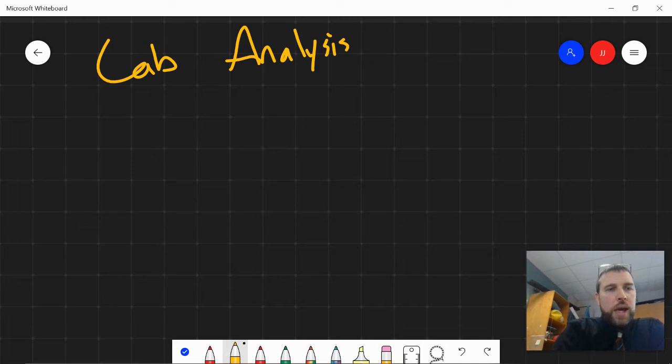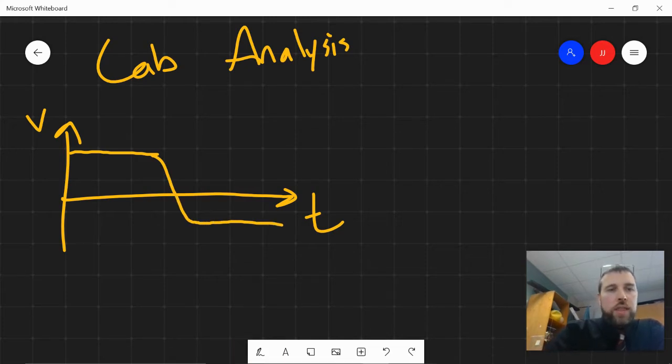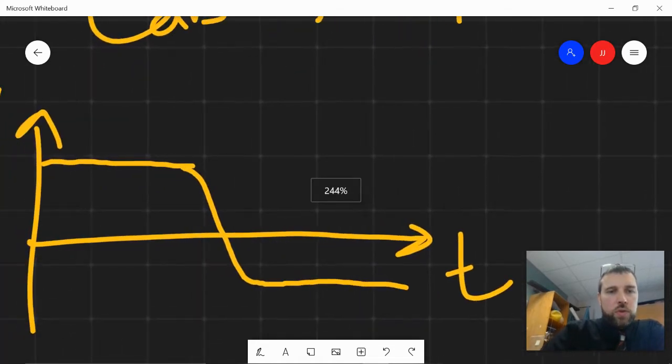We had velocity time data. Velocity, there's time, and it came in with a certain velocity or was accelerating up to that velocity and then crashed and then bottomed out. So, looking at this, zoom in.